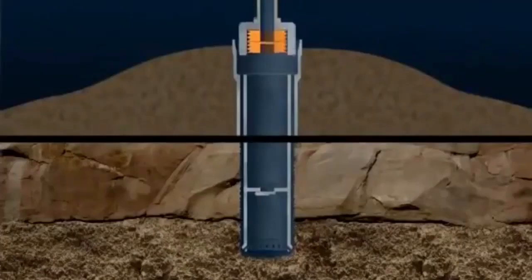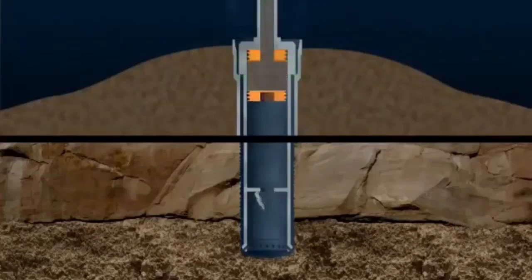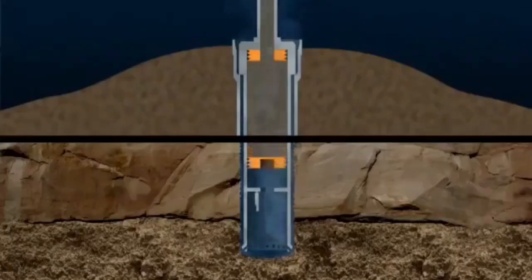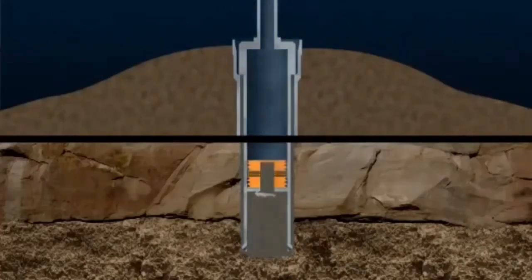A plug that pushes the seawater out is driven downwards by high-pressure cement that fills the conductor. On reaching the float collar, this plug is ruptured and cement flows out of the bottom of the conductor and up the annular space between the wellbore and the conductor.